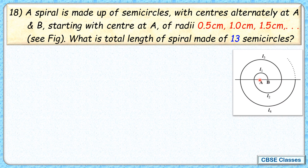First of all, we have drawn a semicircle from point A with radius 0.5 cm. After that from point B with radius as one centimeter, we have drawn another semicircle. And then again we have shifted from B to A. Now this distance has become 1.5 centimeter and we have drawn another semicircle.